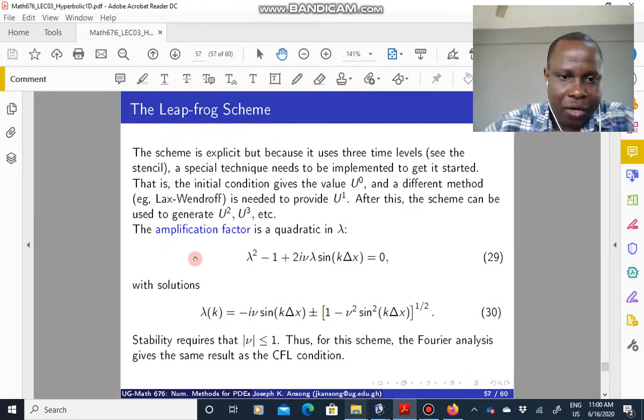You can compute the amplification factor using a Fourier approach that we've done so many times. And then you find that it's a quadratic in lambda, which is given by this expression. Of course then, when you solve this, because it's quadratic, you have two solutions, plus or minus this.